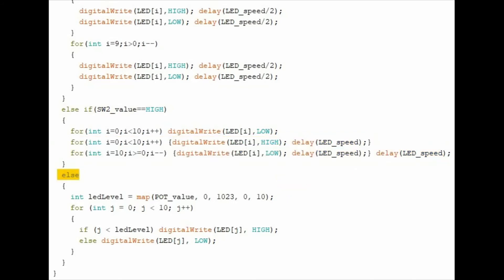If no switch is pressed, then the potentiometer value is displayed on the bar graph. This is done by remapping the pot value from 1024 levels to only 10 levels, using this statement here. This corresponds to the number of LEDs of the bar graph.